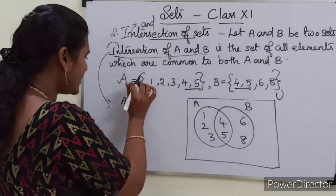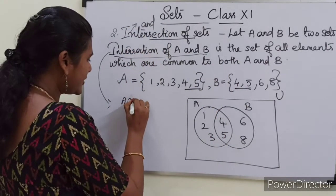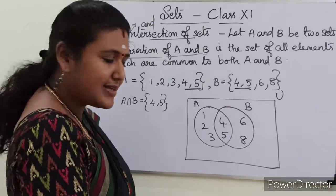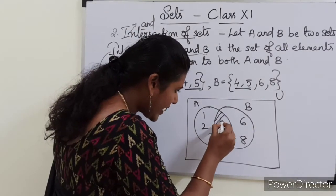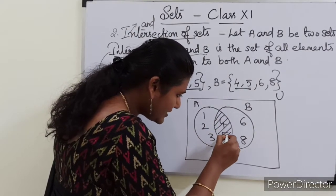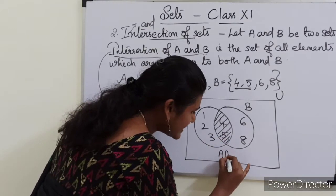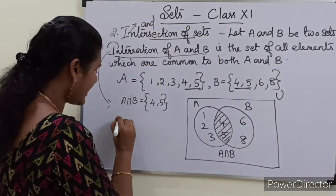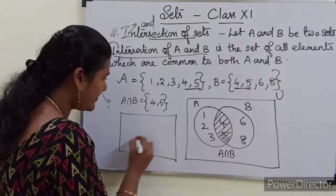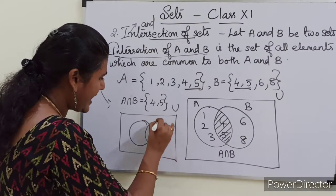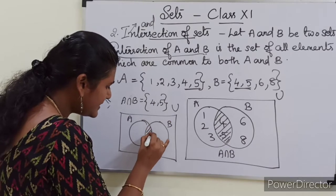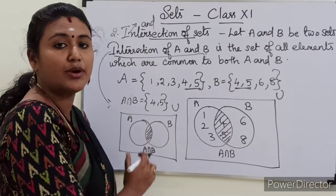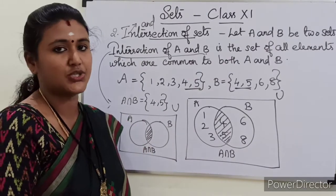A intersection B we got is the set {4, 5}. So if you see, 4 and 5 are in the overlapping portion only. So this is actually A intersection B — this common region only. So if you have a universal set U and two sets A and B, then the intersection is this common region of both A and B — this common region only is represented as the intersection of two sets.